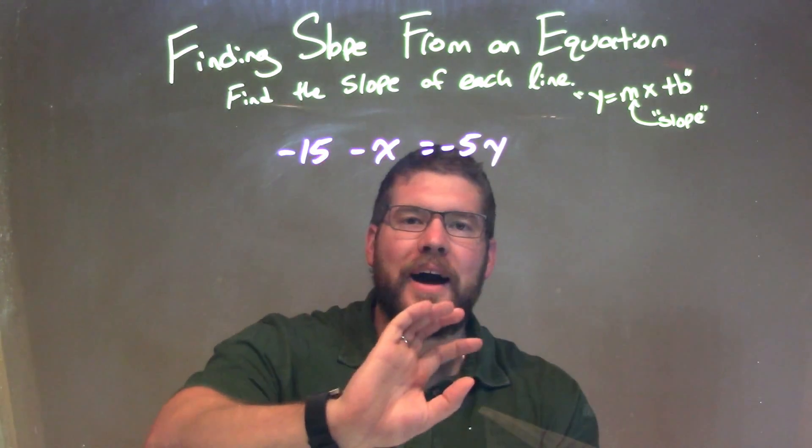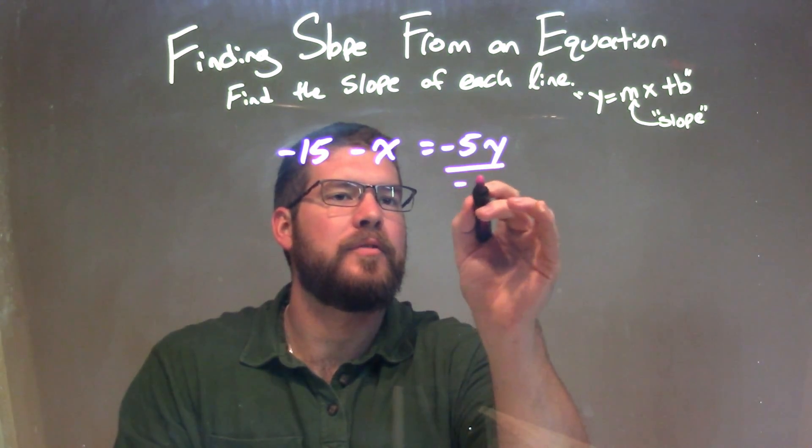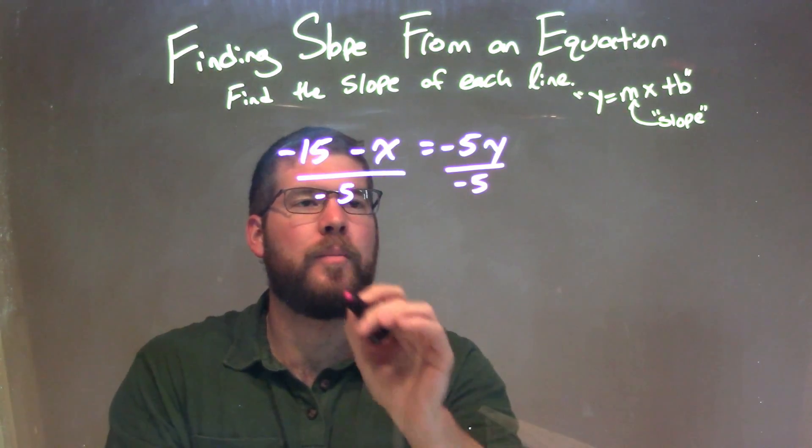I first want to isolate my y. To do that, I'm going to divide both sides by negative 5, and make sure I distribute it to all parts.